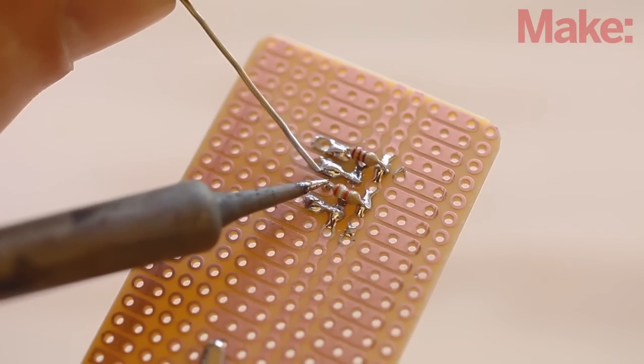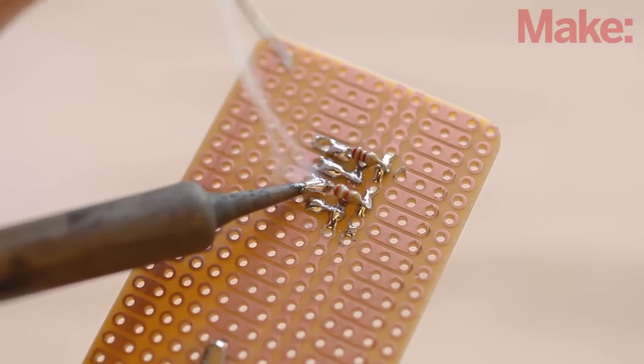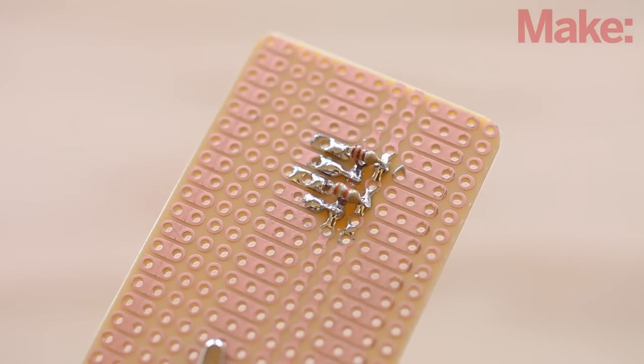Attach two resistors between the power rail and the remaining emitter and detector leads. The emitter gets a 220 ohm resistor and the detector a 39 kilohm resistor.